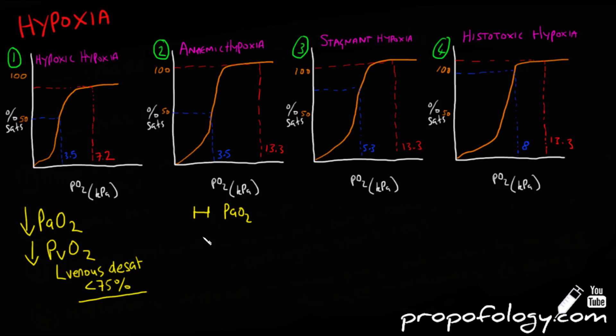Looking at anemic hypoxia, such as in hemorrhage, you'll see that the PaO2 remains normal, i.e. greater than 13.3 kPa. You'll see that the global oxygen delivery is reduced due to reduced oxygen content.